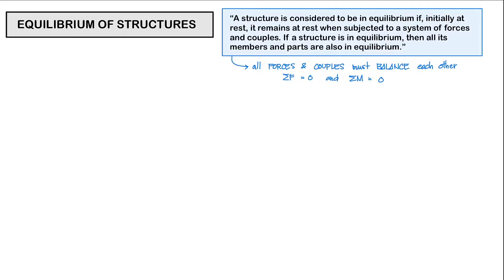So, equilibrium. Equilibrium denotes a sense of balance. So when can we say that our structures are in equilibrium? A structure is considered to be in equilibrium if initially at rest, it remains at rest when subjected to a system of forces and couples.